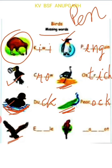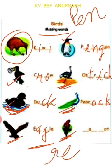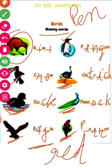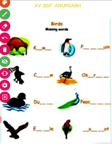And this bird — eagle. E-A-G-L-E. Good. This is parrot, and the color of this parrot is red. Write the spelling of parrot: P-A-R-R-O-T. Parrot.